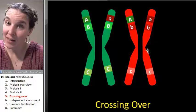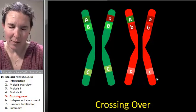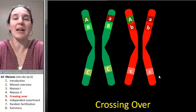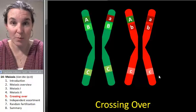And the other one has all three little letters. Do you agree that we just produced a diversity of different possible gametes?